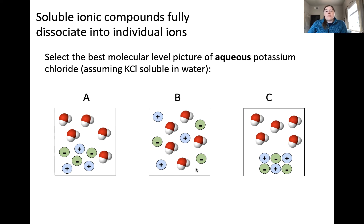Now, the difference between B and C is that this picture for C is actually representing an insoluble ionic compound. So let's talk about what that means.